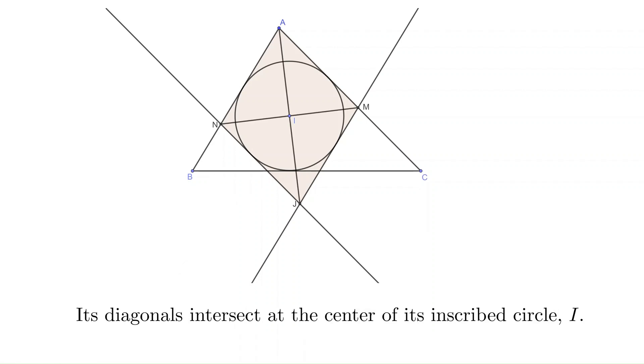Its diagonals intersect at the center of its inscribed circle I. In other words, the line AI passes through J. This establishes the collinearity of three lines we mentioned earlier.